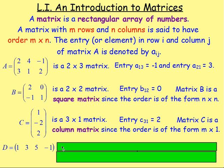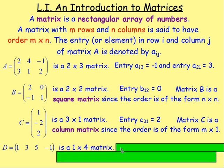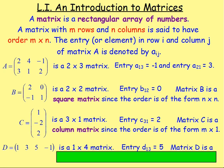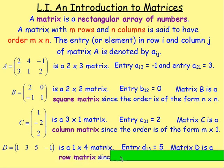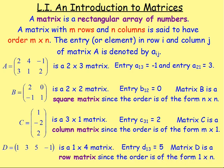Matrix D — what would the order of that be? That's going to be a one by four matrix. It has one row and four columns. Entry D one three would equal — well, the first row, and then the third column: one, two, three — that there would equal five. Matrix D is known as a row matrix since the order is of the form one by N.